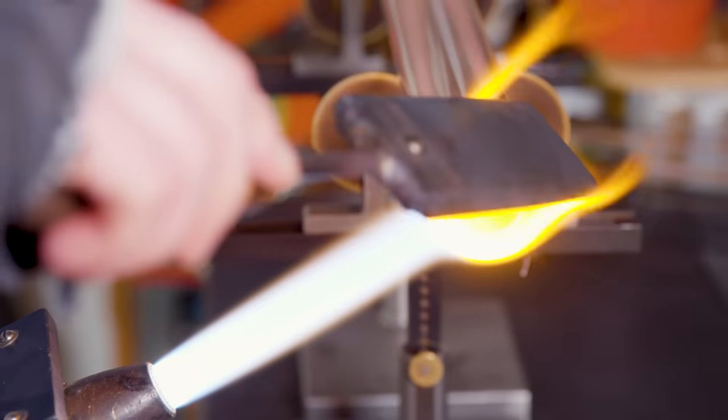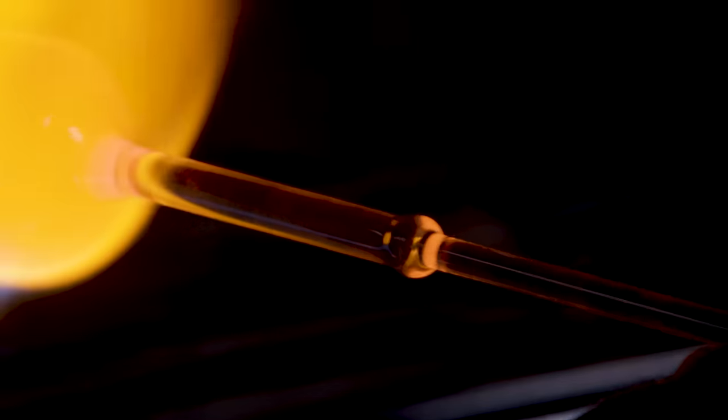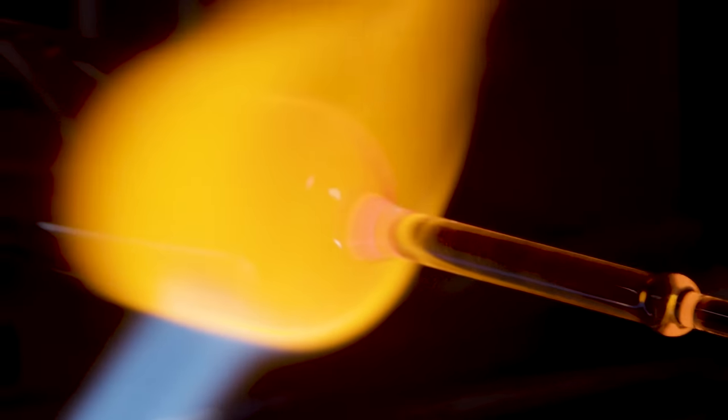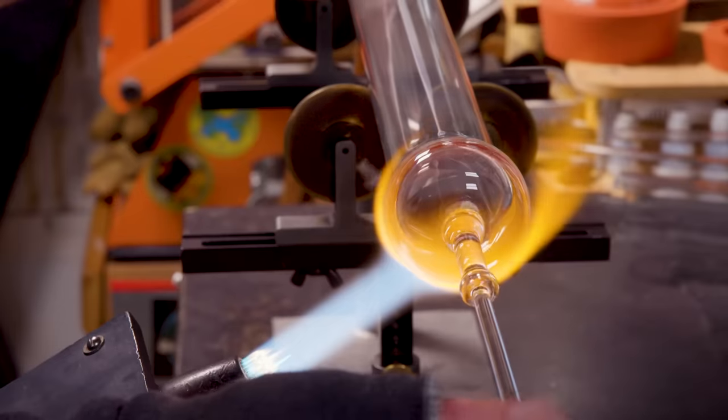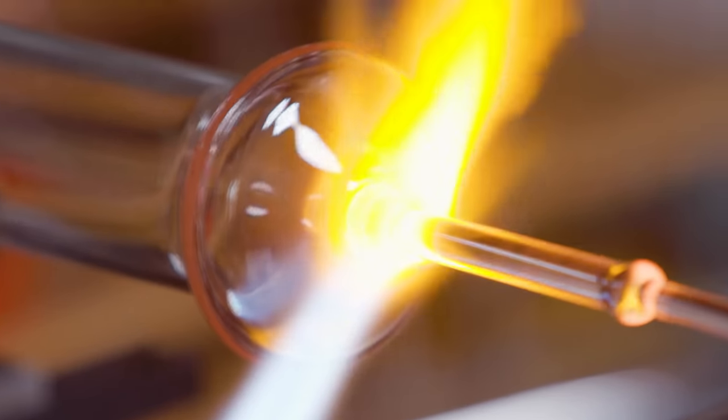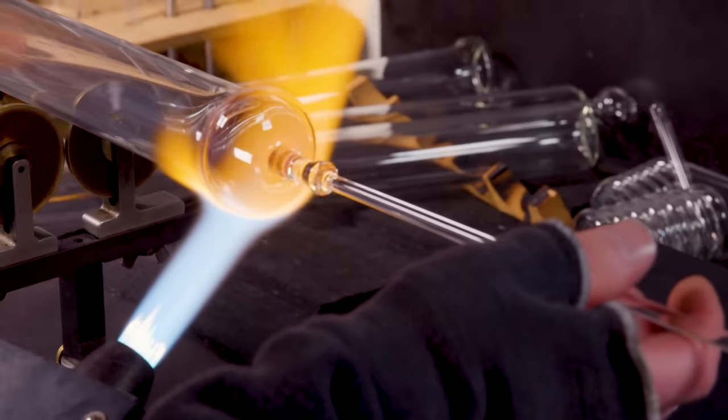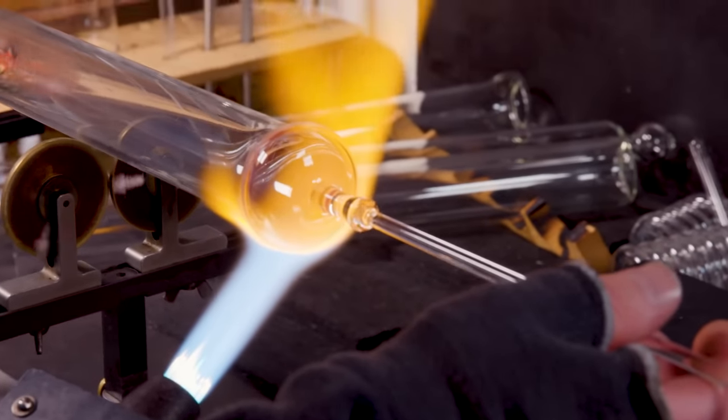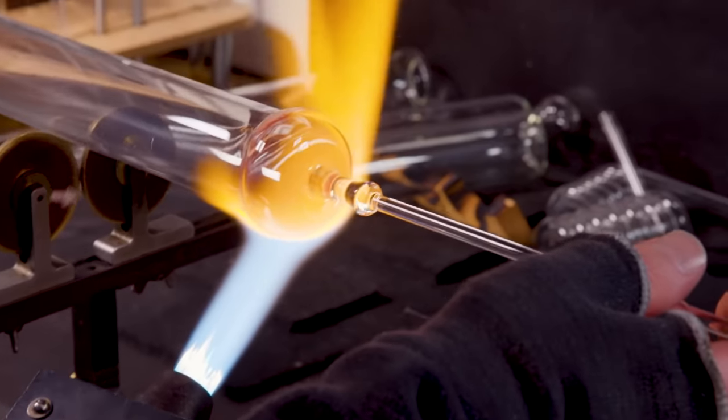I make a foot by closing off the end, attaching my punty or my handle. And then I blow a small squatty bubble. A squatty bubble is a bubble that's just basically compressed to oblong shape.